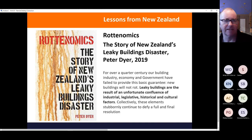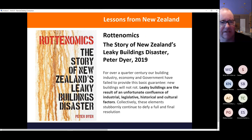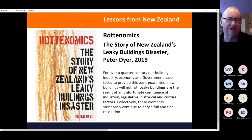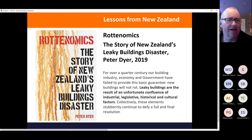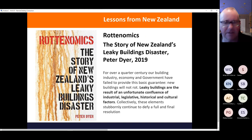The second homework item is a book called 'Rottenomics' by Peter Dyer. The leaky building syndrome was something many had never heard of before coming to New Zealand, but this book gives the full story. It covers the dark period in the construction industry where buildings were not particularly well made. It's worth buying — available from your local bookseller or online.